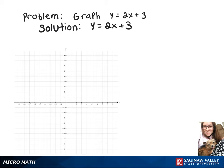To solve and graph y equals 2x plus 3, we can look at the slope-intercept form y equals mx plus b. We identify that m is equal to 2, which is our slope, and b is equal to 3, which is our y-intercept.